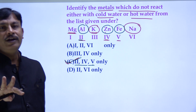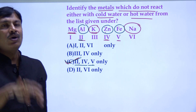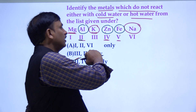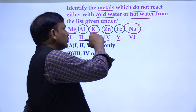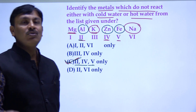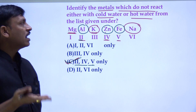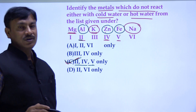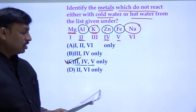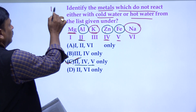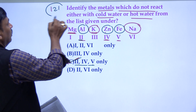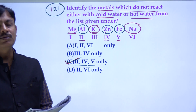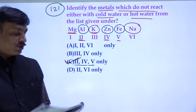So, for question 121, the option C is correct. This covers question 121. Booklet code D. Now let's look at question 122.